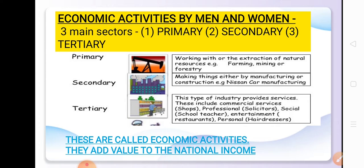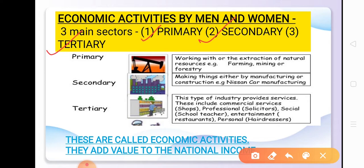In the next slide we are going to study about economic activities done by men and women. People do various kinds of economic activities — whatever they do for earning money to earn their livelihood. These activities can be categorized into three sectors: primary sector, secondary sector, and tertiary sector. We have already studied about this in Class 8th. The primary sector deals with the extraction of natural resources — where people use natural resources such as in farming, where they extract food grains.